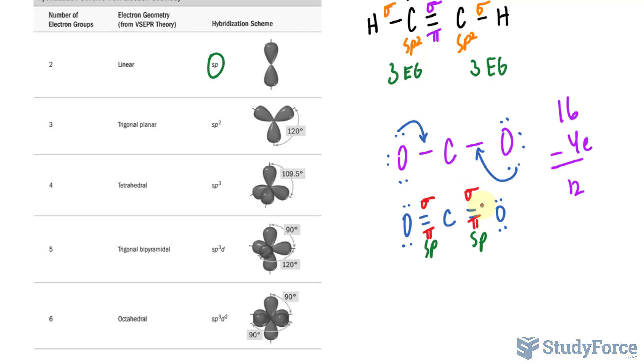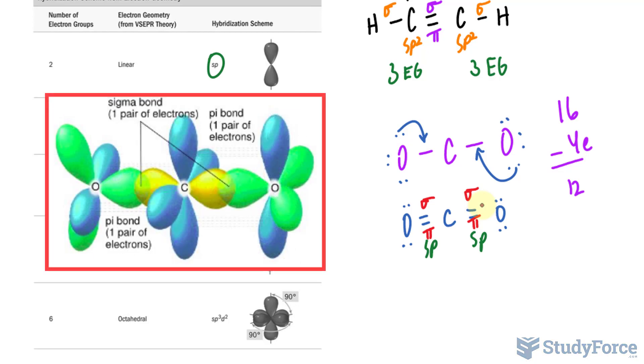Remember, with sigma bonds, the orbitals of the two atoms are facing directly towards each other, whereas in a pi bond, they're on the same axes but far away from each other, therefore forming a parallel bond. Pi bonds are generally weaker than sigma bonds. A better visual of this is shown on your screen.